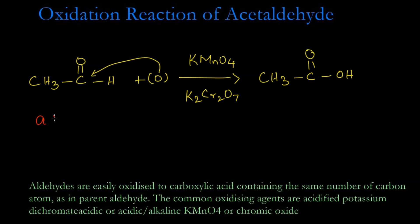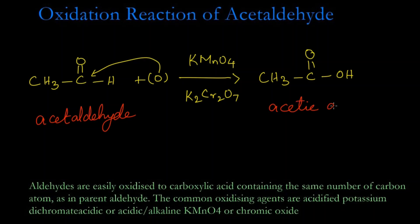Acetaldehyde is oxidized in the presence of acidified or alkaline potassium permanganate, or potassium dichromate, to give acetic acid. The IUPAC name of acetaldehyde is ethanal, and the IUPAC name of acetic acid is ethanoic acid.